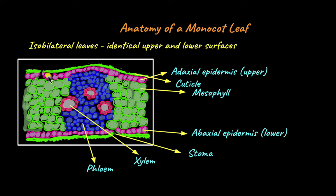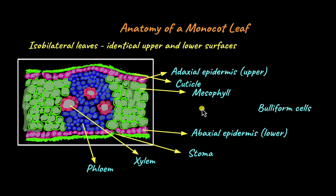There's one more major distinction between monocot and dicot leaves. In monocots, the stomata are present on both the adaxial and the abaxial surfaces. The presence of stomata on the adaxial surface means there could be more water loss from the upper surface. To avoid this, some monocots have special cells called buliform cells. Buliform cells are modified epidermal cells located along the veins, which are made up of the vascular bundles — phloem and xylem.